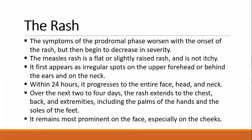The rash: The symptoms of the prodromal phase worsen with the onset of the rash, but then begin to decrease in severity. The measles rash is flat or slightly raised and is not itchy. It first appears as irregular spots on the upper forehead, behind the ears, and on the neck. Within 24 hours it progresses to the entire face, head, and neck. Over the next two to four days, the rash extends to the chest, back, and extremities, including the palms of the hands and soles of the feet, and remains most prominent on the face, especially the cheeks.